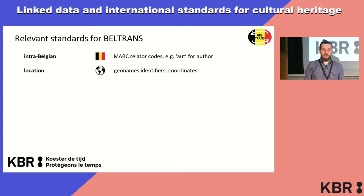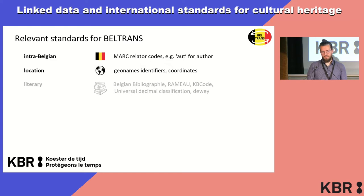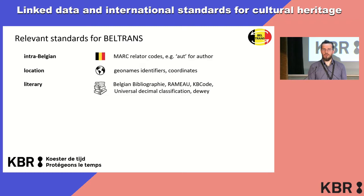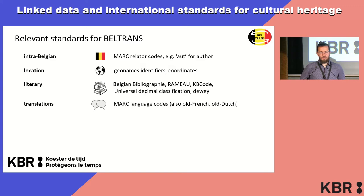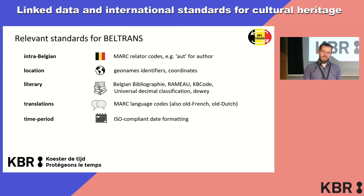For nationality in this case, and for location, of course, there are GeoNames identifiers. There are also coordinates, which are important there. If we look into literary genres and classifications, there are different classification systems all used in our corpus — books from KBR follow the Belgian bibliography, but there are also KBR codes, the Universal Decimal Classification, Dewey classification — lots of different standards. And of course for translations, the MARC language codes are another standard, where we also look into old French or old Dutch, as well as Dutch and French. For the time period, we also want to have clean ISO-compliant date formatting — a year, or year-month-date — so there's also some data cleaning involved.